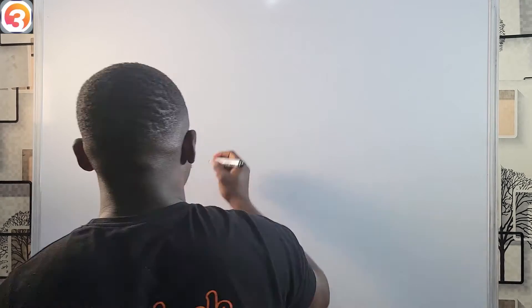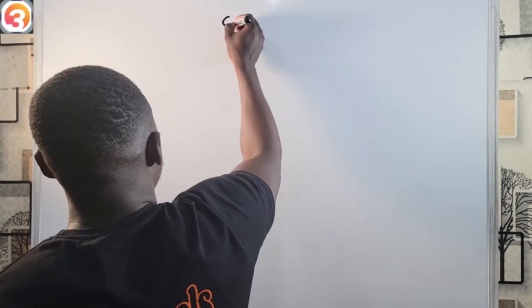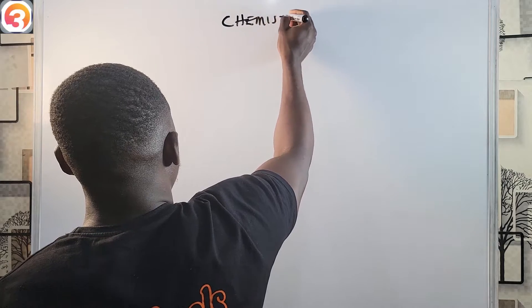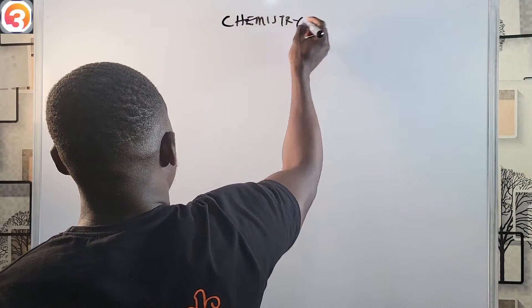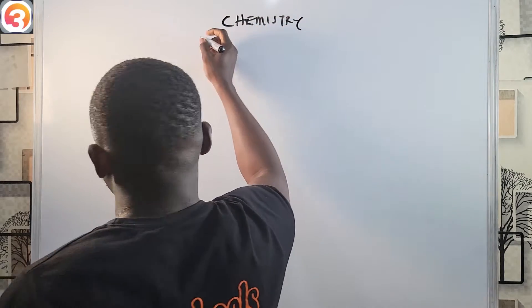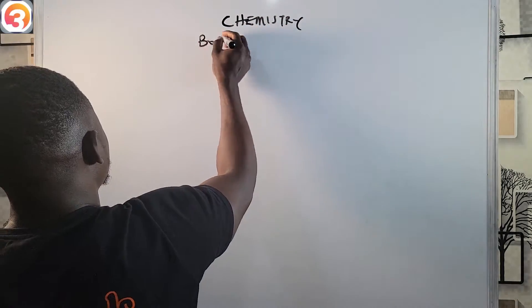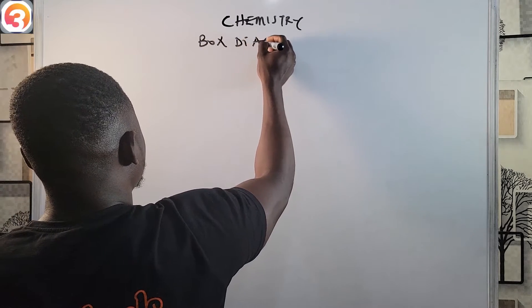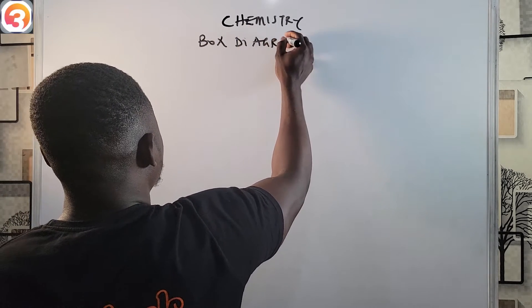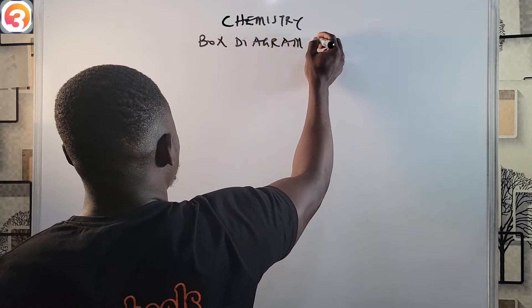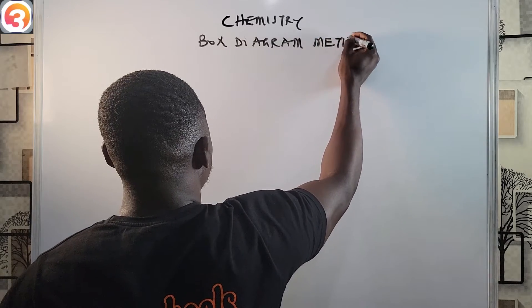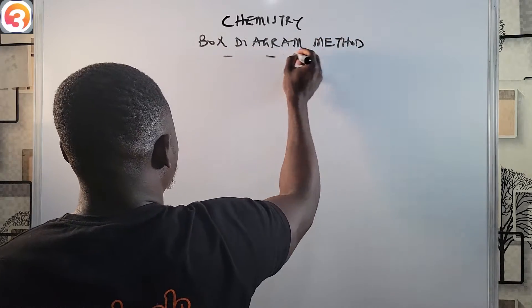Hello guys and welcome back to JAM chemistry class. In this class I'm going to be looking at the box diagram method of writing electronic configuration.